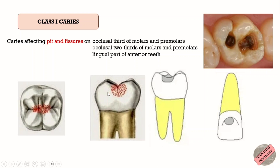Class 1 also includes pits and fissures present on the lingual surfaces of the anterior teeth. So it is the occlusal surface for the posterior teeth and the lingual surface for the anterior teeth.